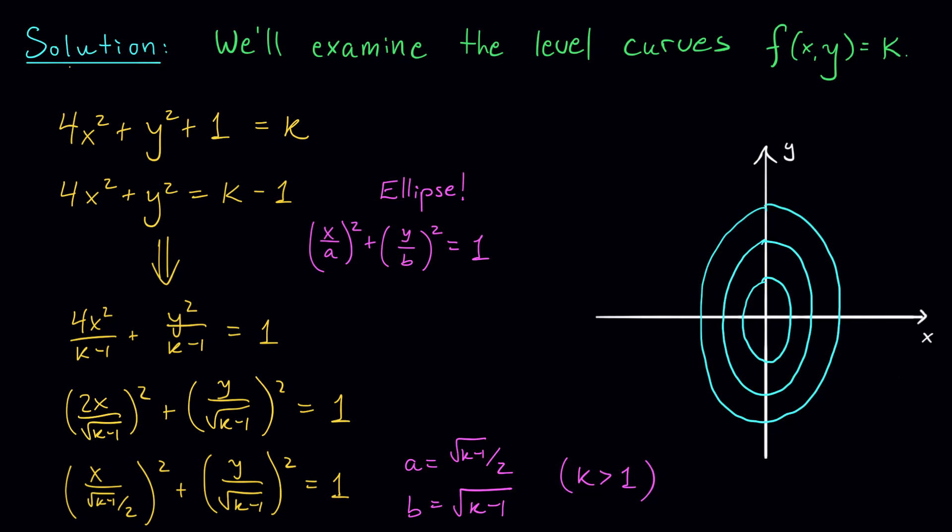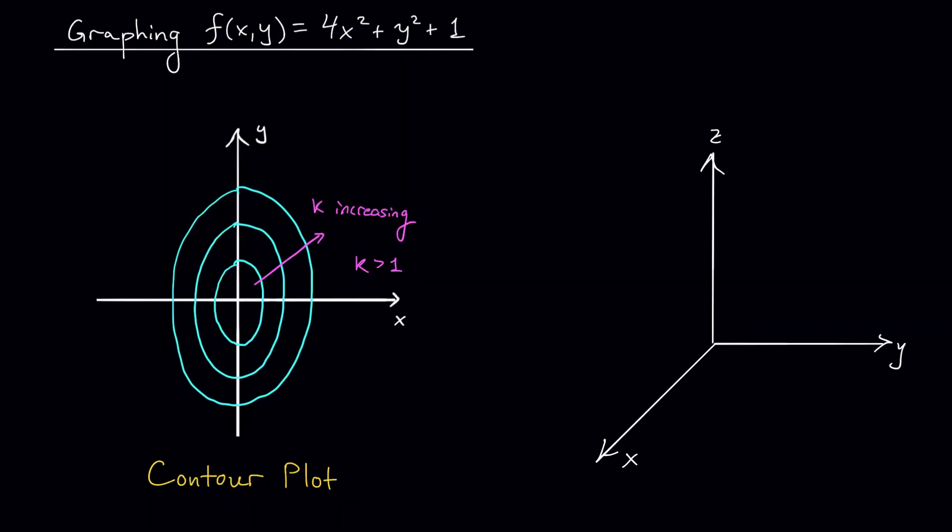When k increases, the ellipses are getting larger. So let's now raise these level curves up to the appropriate heights and build our exoskeleton. Okay, we have the contour plot of our function, which gives us a description of our level curves for k bigger than 1.